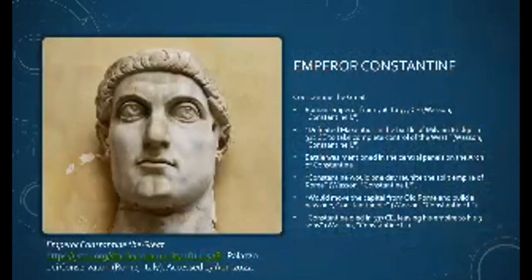Constantine I, also known as Constantine the Great, was Roman Emperor from 306 to 337 CE. After his father's death, Constantine continued to build a reputation as a man capable of rapid and decisive action when in 307 CE he attacked the Franks.